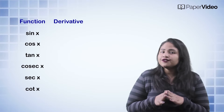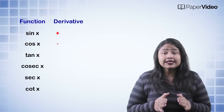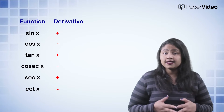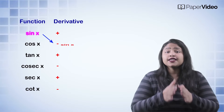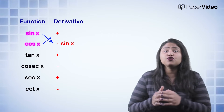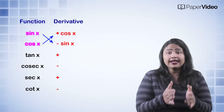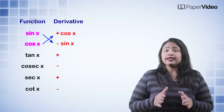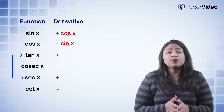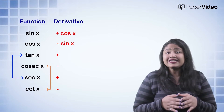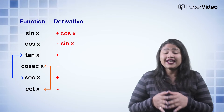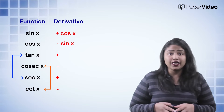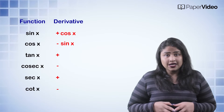The best way to remember the derivatives of trigonometric functions is: first, alternate the positive and negative signs. Then, alternate the first two functions, that is sin x and cos x. Then, pair the alternate trigonometric functions, that is tan x with sec x, and cosec x with cot x.